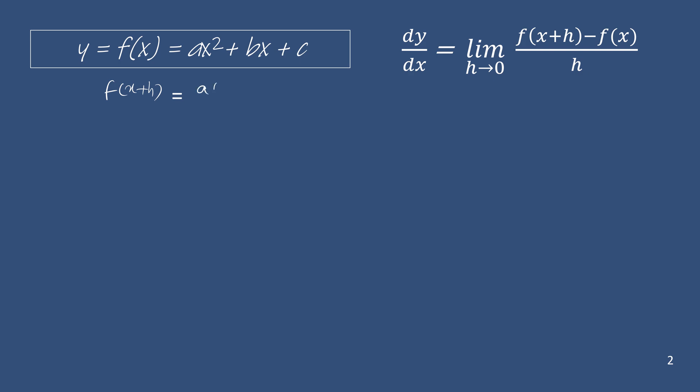As usual, we must find f of x plus h by replacing x by x plus h in the f(x). That is a times x plus h whole square plus b times x plus h plus c.